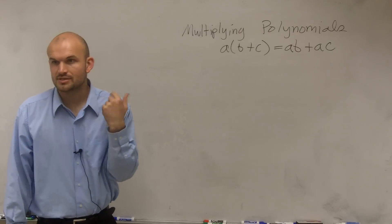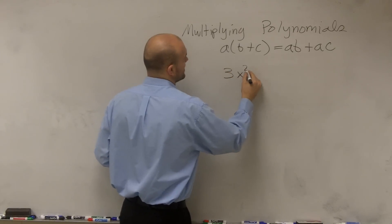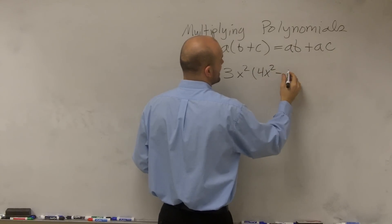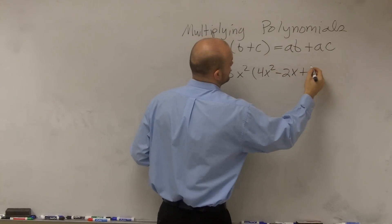All right? So let's go and take a look at one. When I have, let's say, 3x squared times 4x squared minus 2x plus 1.